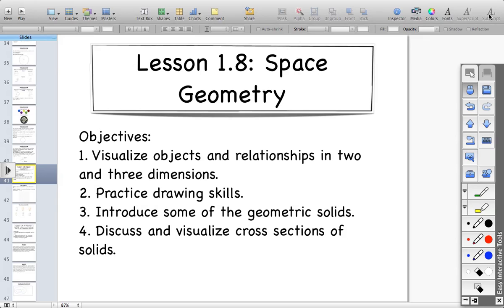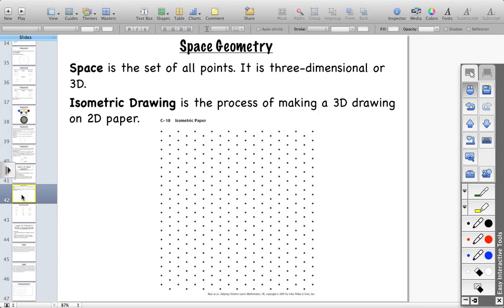We're going to introduce some of the geometric solids that we will work with and discuss through our practicing, our exercises, discuss and visualize cross-sections of the solids. First we're going to take a look at basically drawing. So we already know that space is the set of all points, and we talk about space being three-dimensional, shortcut it to 3D. Isometric drawing is the process of making a three-dimensional object that we see with our eyes two-dimensional on paper, yet be able to show the characteristics that this is three-dimensional.